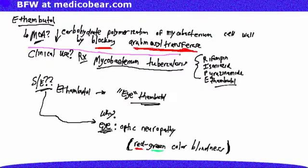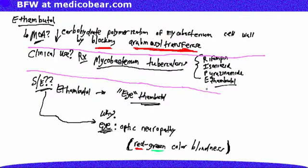So we discussed the mechanism of action of ethambutol and talked about its clinical use. It's one of four combination drugs used to treat Mycobacterium tuberculosis, remembered by the mnemonic RIPE. And lastly, we discussed some of the side effects.